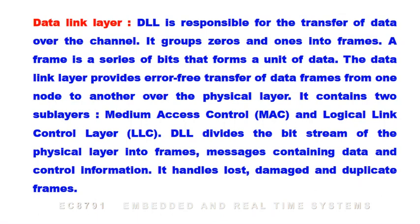The data link layer is responsible for the transfer of data over the channel. It groups zeros and ones into frames — a frame is a series of bits that form a unit of data. The data link layer provides error-free transfer of data frames from one node to another over the physical layer. It contains two sub-layers: Medium Access Control (MAC) and Logical Link Control (LLC). It also handles lost, damaged, and duplicate frames.